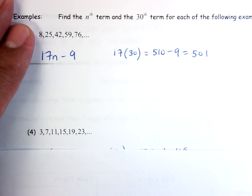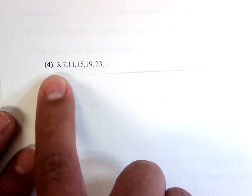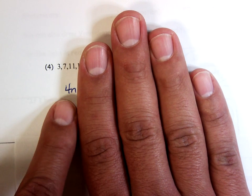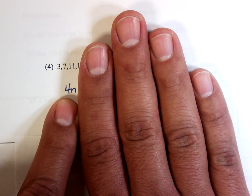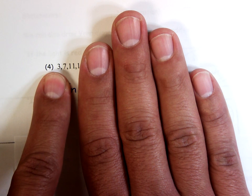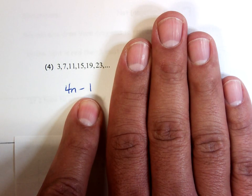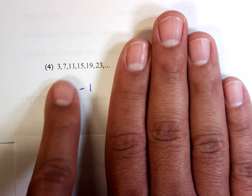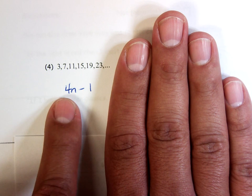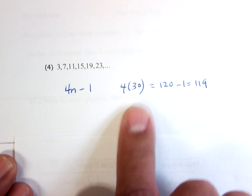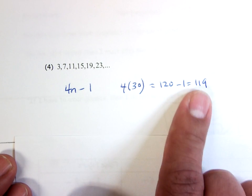Next sequence: 3, 7, 11, 15, 19, 23 — going up by 4 every time. So we start with 4n. When n equals 1, 4 times 1 is 4, but the first term should be 3, so subtract 1. The nth term is 4n − 1. For the second term: 4 times 2 is 8, minus 1 is 7 — correct. For the 30th term: 4 times 30 is 120, minus 1 gives 119.